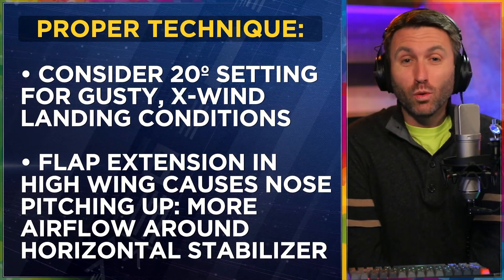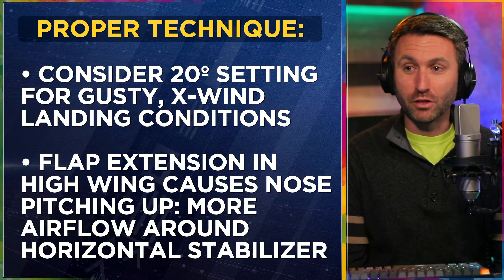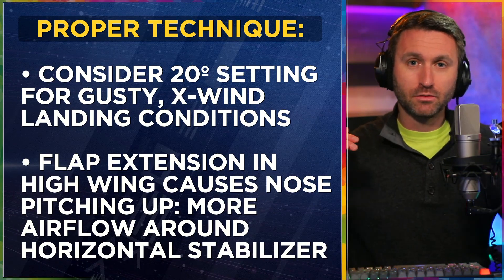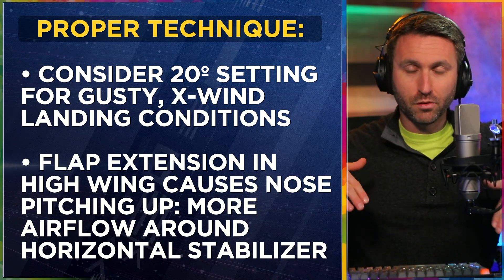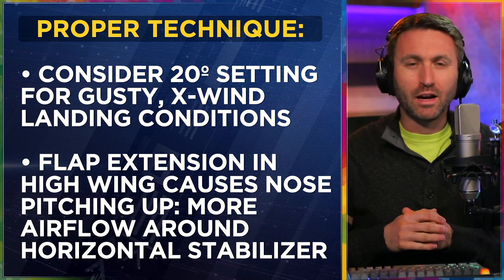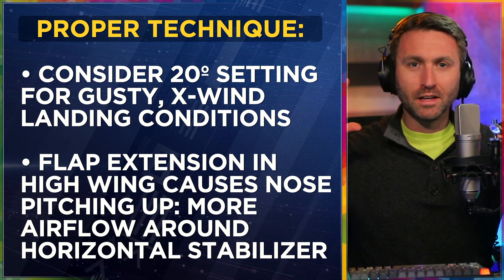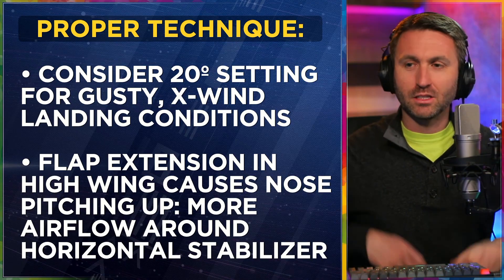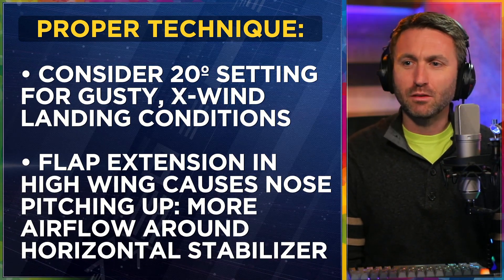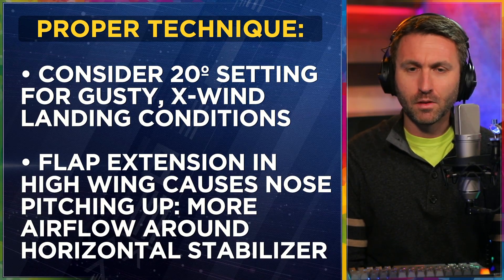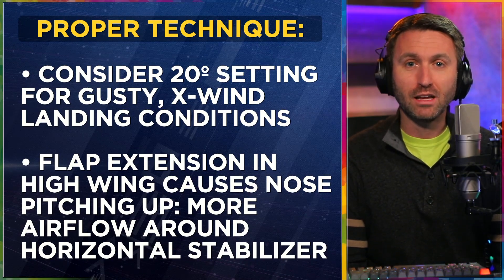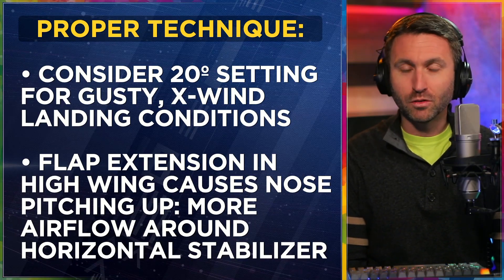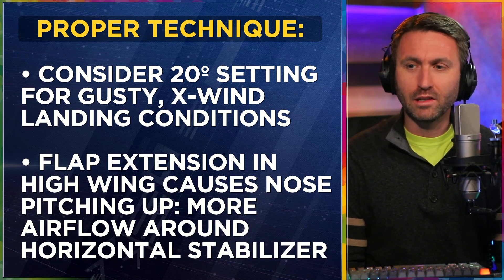Consider a 20-degree setting or maybe even just 10 degrees of flaps for gusty or crosswind landing conditions. You're not going to get as much drag, but you're also not going to get as much of that crosswind effect with less flaps. That's the theory behind it, especially with high-wing airplanes where a lot of that crosswind gets trapped on the fuselage and near the flap area. In a gusty condition you'll be making a faster landing — you don't know if you'll have that headwind or if it's going to go away — so a relatively faster landing means you want less flap setting.